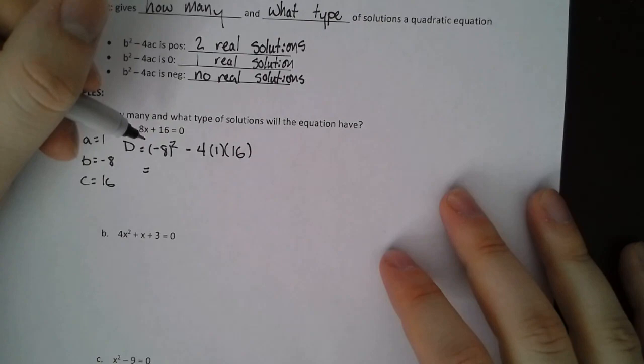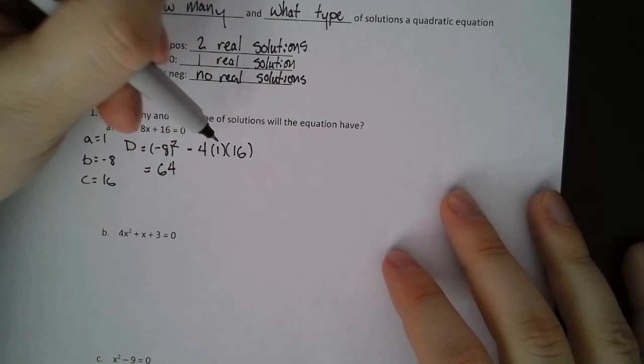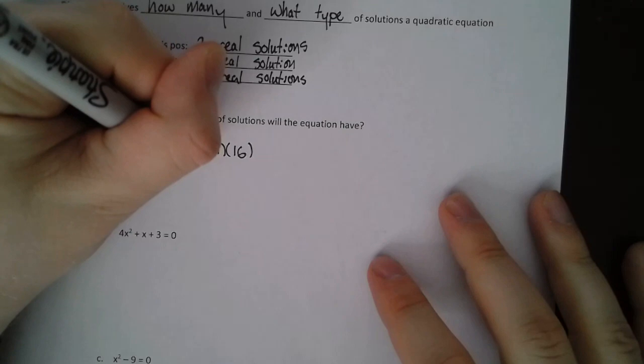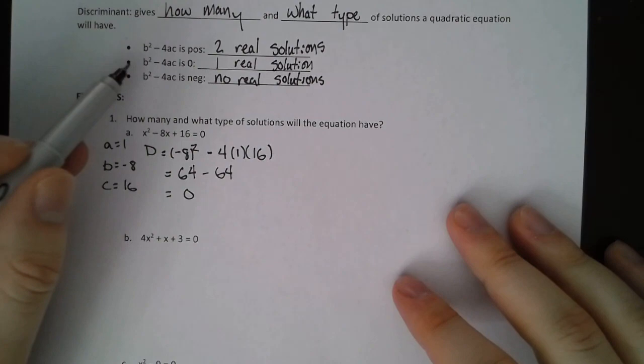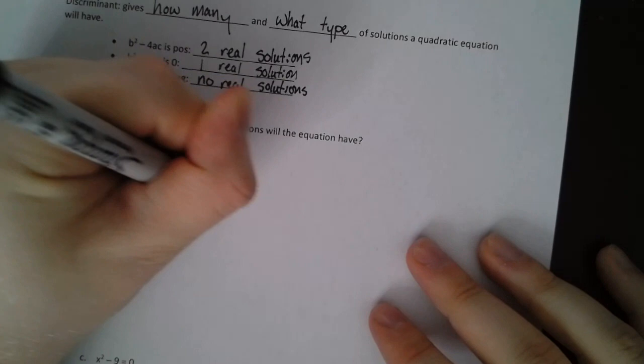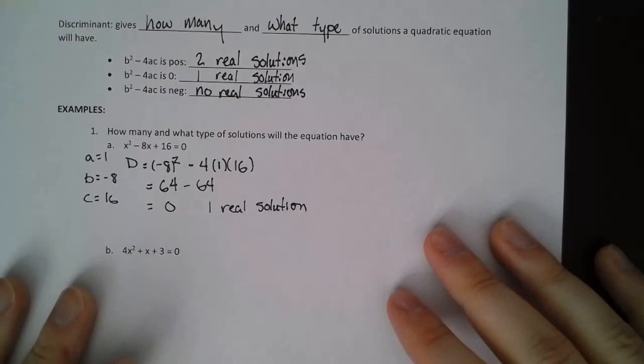So I'm going to say d equals that for discriminant. Negative 8 squared is a positive 64. And then we have negative 4 times 1 times 16. That is also negative 64. 64 minus 64 is 0.